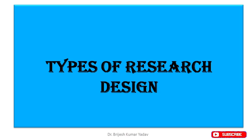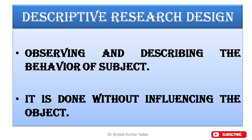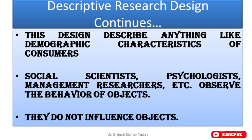In descriptive research design, the researcher observes and describes the behavior of subjects. When he describes and observes the behavior of a subject, he does not influence the object. Descriptive research design describes anything. For example, demographic characteristics of consumers are described by the researcher, and while doing so, the researcher is not going to influence consumers.